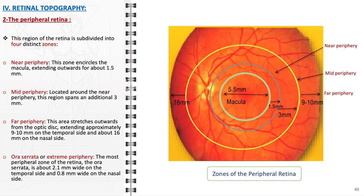4. Ora serrata or extreme periphery: the outermost zone of the retina, the ora serrata is about 2.1 mm wide on the temporal side and 0.8 mm wide on the nasal side. This boundary region is where the retina transitions into the ciliary body. The ora serrata's structure is adapted for securing the retina in place, reducing the risk of detachment and maintaining the eye's structural integrity.